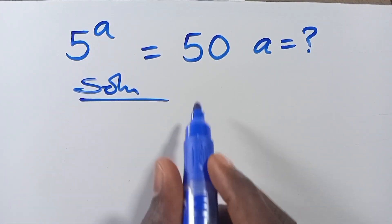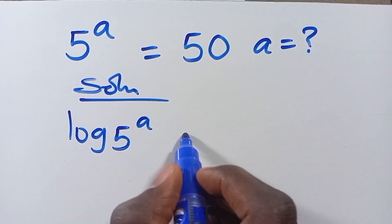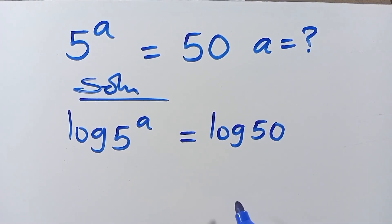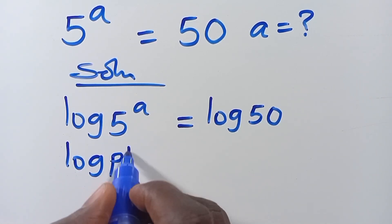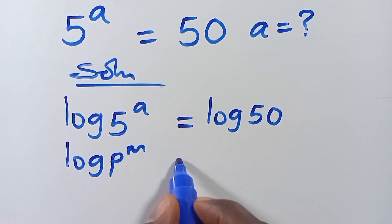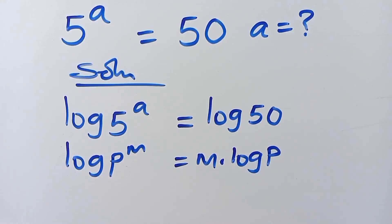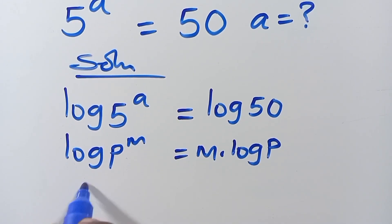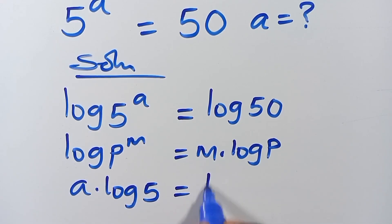So we have to introduce log to this, so we have log 5 to the power of A equals log 50. Let us recall that when we have log P to the power of M, this power M comes down to base as M multiplied by log P. So this power A comes down to base here as A multiplied by log 5 equals log 50.